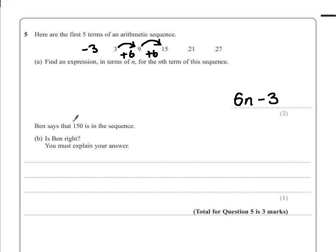Ben says 150 is in this sequence. Is Ben right? You must explain your answer. Well, all the numbers appear to be in the 3 times table. And 150 is in the 3 times table. But that doesn't guarantee that it's definitely there. 15 is in our sequence. And 10 times 15 is 150. That's also another way of showing that it should be in the sequence.